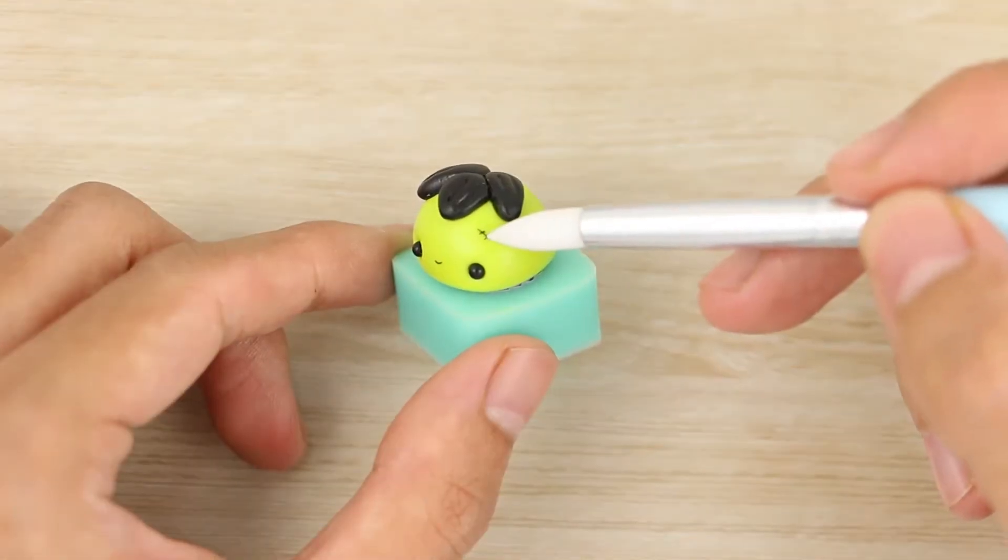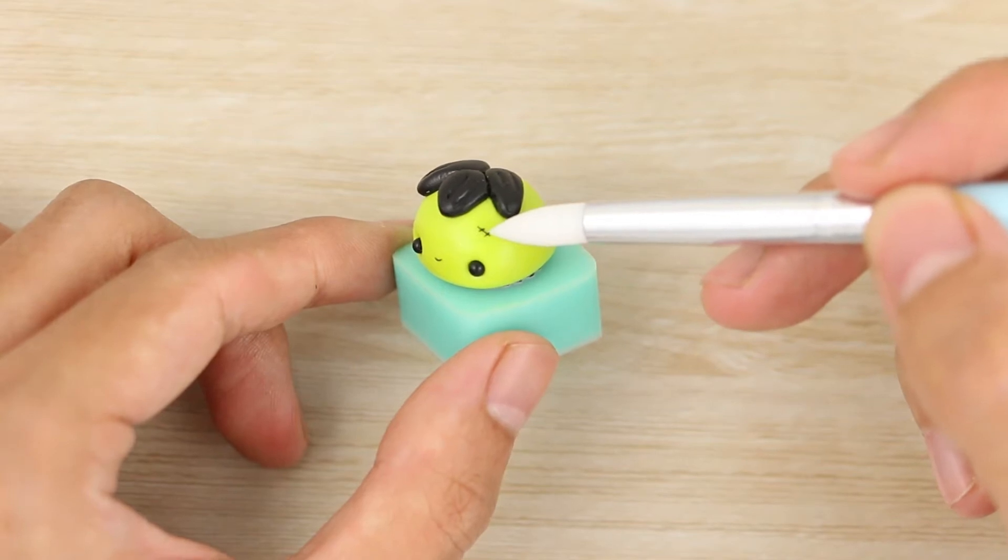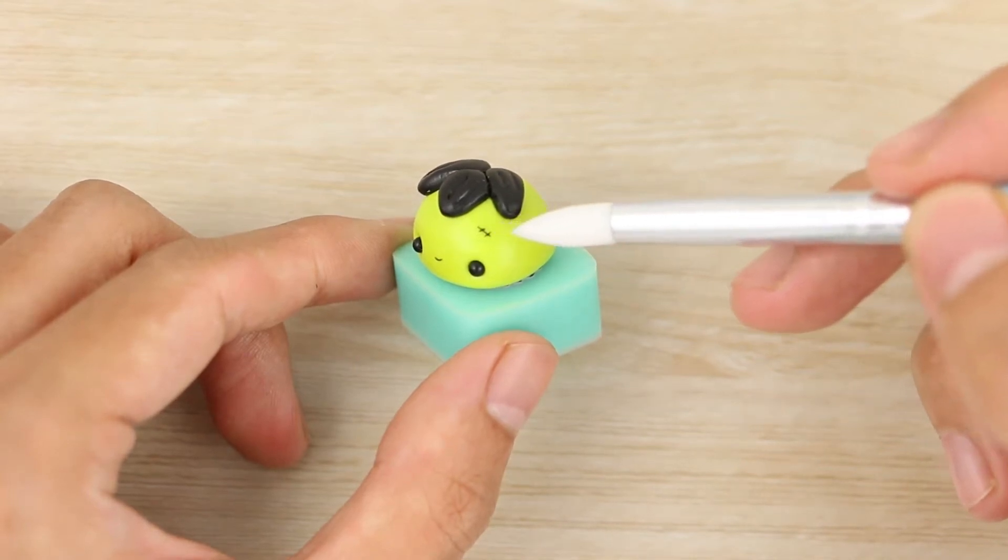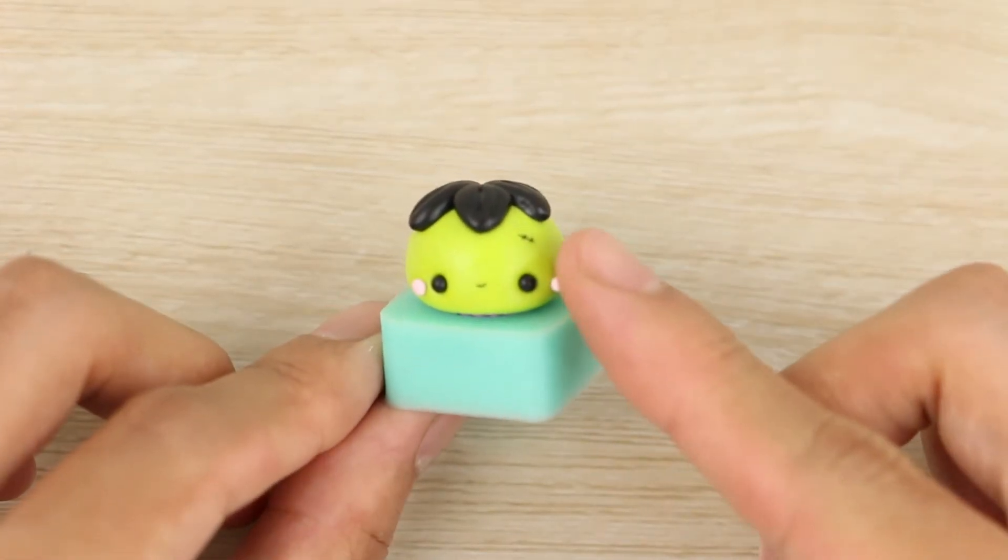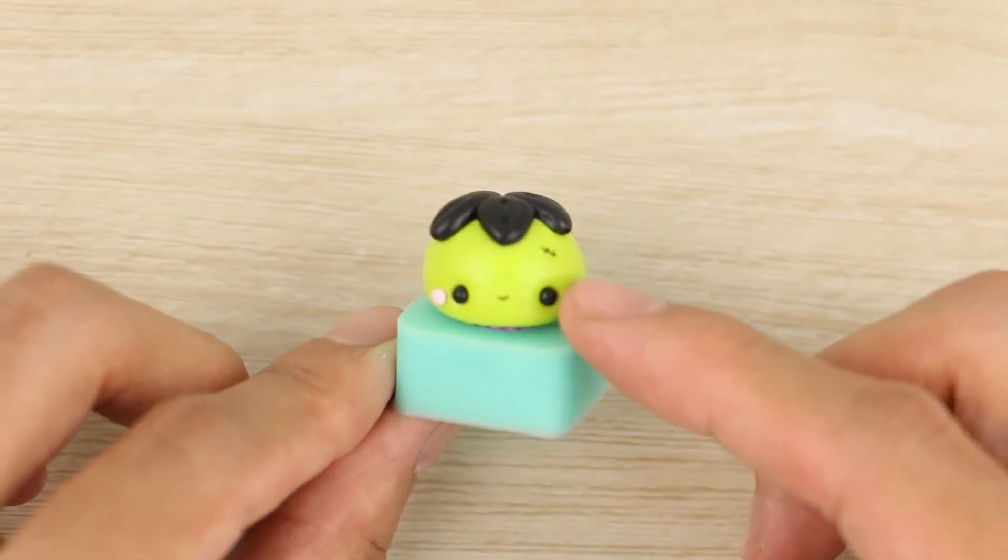I'm then arranging a few more thin snakes to look like stitches on the side of his head. For the cheeks I'm attaching small balls of light pink and flattening those a little bit.